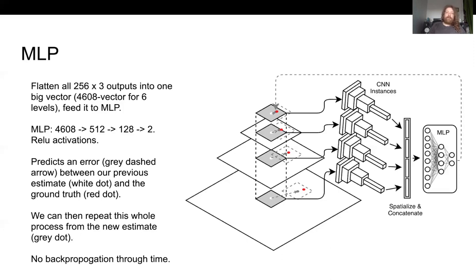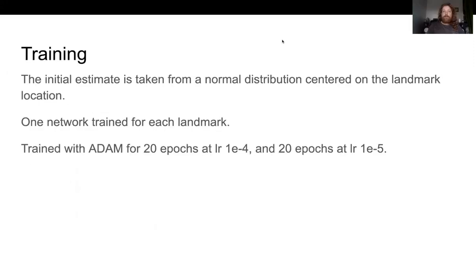Also note there's no backpropagation through time - we just apply the same process over and over and do backpropagation on each iteration. For training we train one network for each landmark and we're taking the initial estimate for where the network is looking from a normal distribution centered on the training set landmark locations. And also we train the network with Adam.